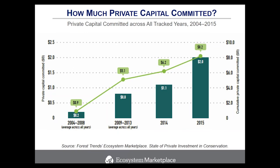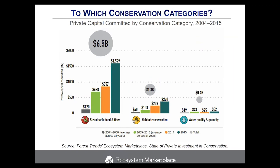Investors reported committing $8.2 billion in total. The light green line shows cumulative capital committed beginning with $0.9 billion tracked in the 2014 report, adding additional information collected across 2009 to 2015 for a most recent total of $8.2 billion cumulative. The dark green bars show average capital committed per year by time period. As you can see, the total capital committed on average has more than doubled from $0.8 billion annually from 2009 to 2013, to $2 billion committed in 2015 alone.